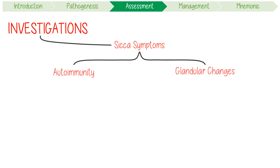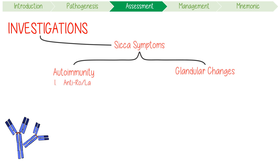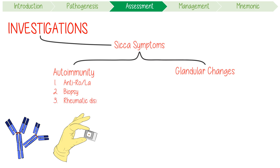Autoimmunity can be shown in three ways. Firstly, a positive serology for anti-Ro or anti-La. Secondly, a biopsy of the minor salivary glands which shows lymphocytic infiltrates. Finally, if a patient has a well-established systemic rheumatic disease.